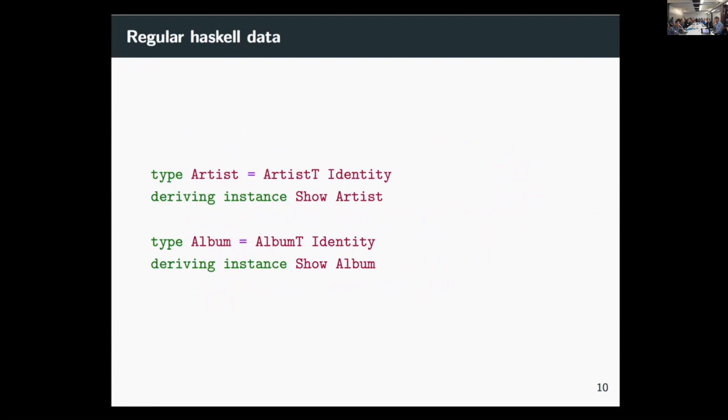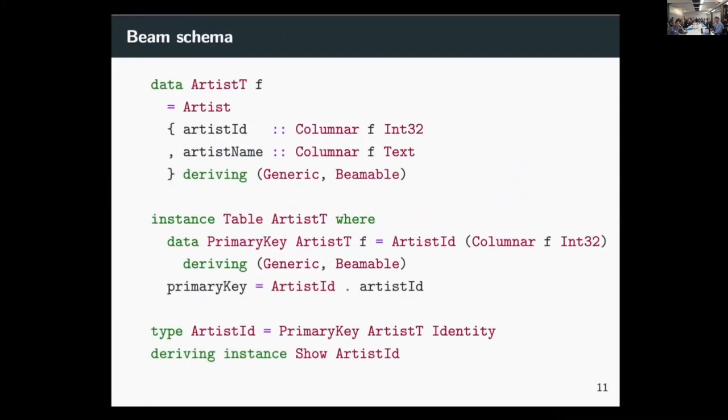So you have normal Haskell records that can be used at the Haskell level and, as we'll see later on, at the SQL level, which is kind of nice. So then going back to artists, we also want to be able to derive some information for relational access, one of the main things being having a primary key. So we have this table type class, which includes this associated data type. For each table, the primary key has all functions to extract the primary key from a value of the table. And then again, we can also do the same thing we did with the table type with the primary key type.